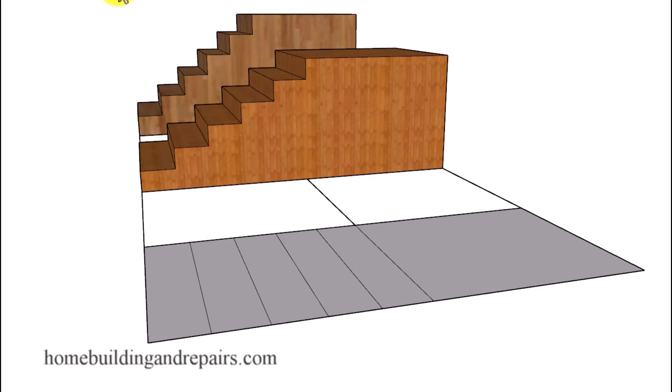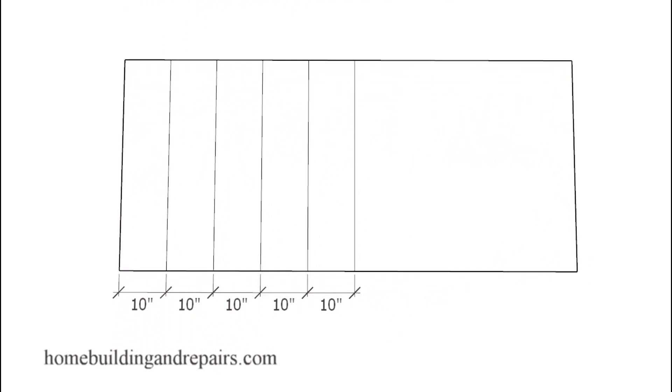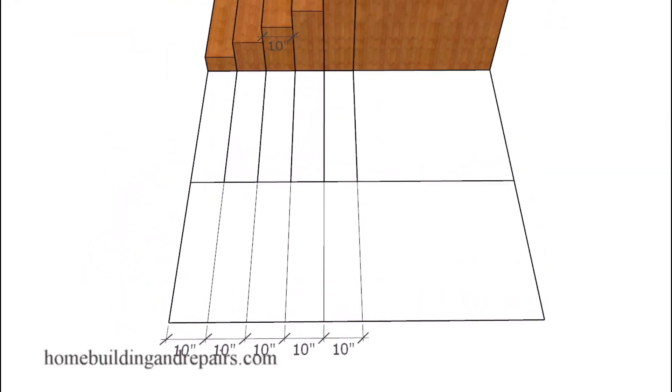Once you have those measurements, you can go ahead and lay your stairway out on the ground. That might look something like this when you're done. You might have a landing and then five steps. And if the minimum building code requirement is 10 inches, then something like this might work.